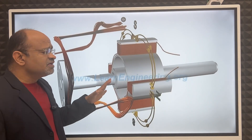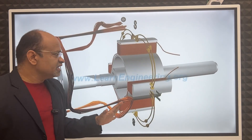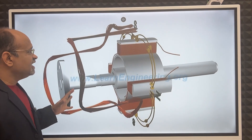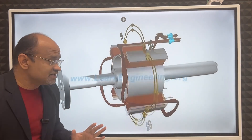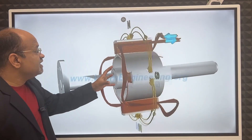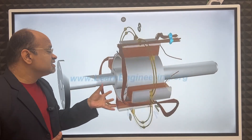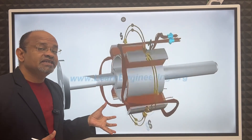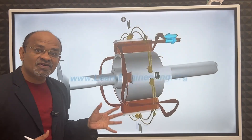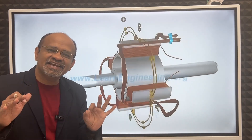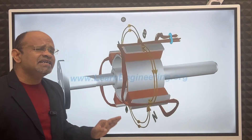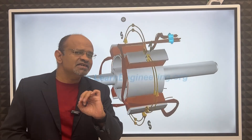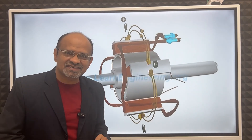Now we have the rotating magnetic field. To produce three-phase power, three coils are fitted 120 degrees apart, and that is why we get three-phase electricity.